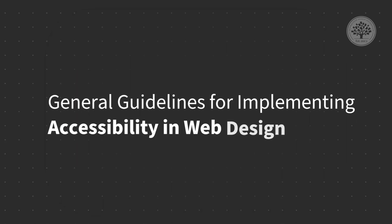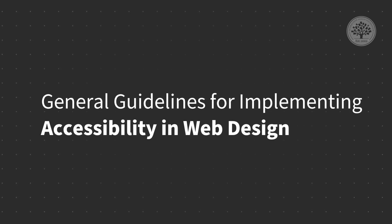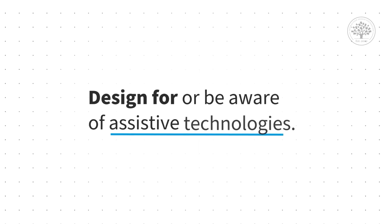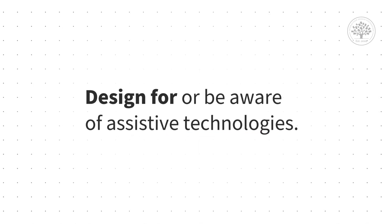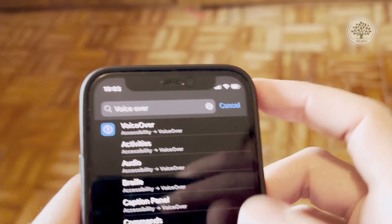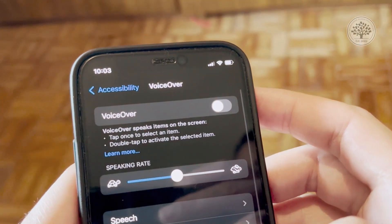Here are some general guidelines for implementing accessibility in web design. One of the keys is to design for assistive technologies, or to at least be aware of them when you're designing. If you're looking at visual impairment, screen readers are the main assistive technology. Screen readers take the contents of the screen and read it out to you. They are now built into most platforms by default, including smartphones. If you want to ensure your website works well with screen readers, you should try it out — an accessibility specialist may be helpful.